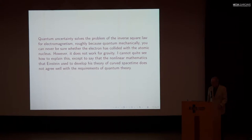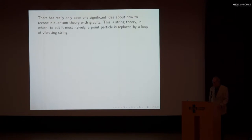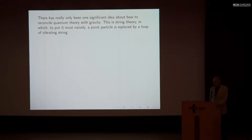This is a classic problem first seen in the 1930s, and it didn't go away afterwards when much progress was made in other areas of physics. It only became clearer that it was difficult to reconcile gravity with quantum mechanics. In my opinion, there's only been one significant idea about this problem, and that's string theory, in which, to put things most naively, a point particle is replaced by a little loop of vibrating string.